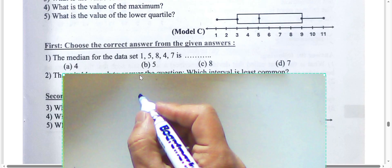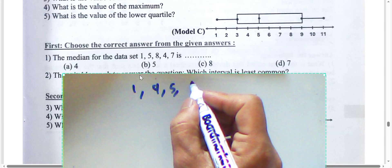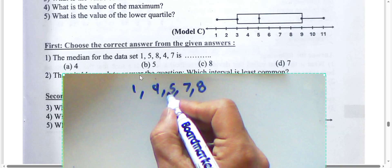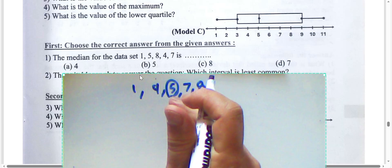Next question: find the median for the data. First, arrange the values: one, four, five, seven, eight. Five lies in the middle, so the median is five.